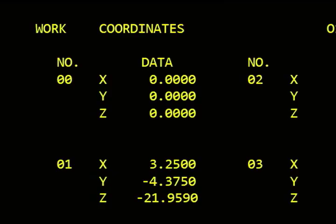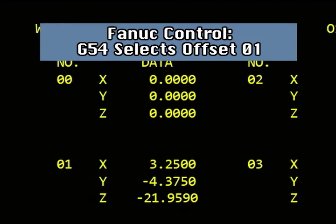When the G54 offset command is active on this FANUC control, it uses the value stored in the first position of the offset table to establish the position of program zero. G55 uses position two in the table, and so on.